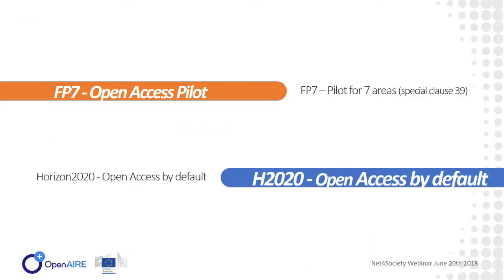This open access policy in Horizon 2020 is a continuation of an open access pilot that was already in place in the FP7 framework program, where it was only applicable for seven areas. Because that pilot was quite successful, they decided to continue it in Horizon 2020 and make it the default policy for research articles and monographs.